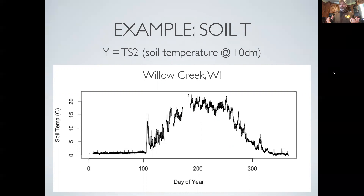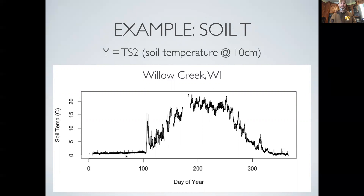In explaining these concepts, I'm going to rely on a simple data set: measurements of soil temperature, in this case measured at 30 centimeters depth, coming from a study site in Wisconsin called Willow Creek. We'll see more about this site in the model diagnostics lecture that follows. Looking at the data, we can see a nice flat low-temperature period in winter and then a seasonal cycle — it warms up in spring, it's warm in summer, it cools down in fall, and then returns to a baseline winter value. So what causes that variability? What are the drivers of that seasonal cycle, and what causes the wiggles around it?